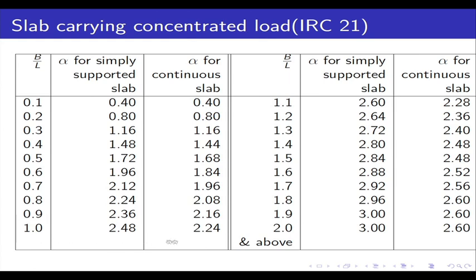As I keep mentioning, IS 456 provides information up to a certain point, but for bridge spans we need additional data from IRC 21. The table from IRC 21 has two more columns: one alpha value for simply supported slabs and one for continuous slabs. I have reproduced this table from IRC 21 here as a ready reference.